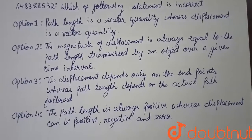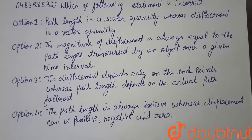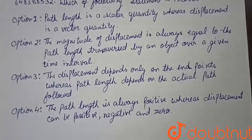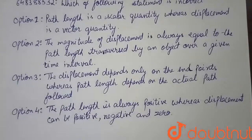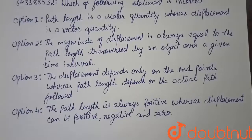Option 2 states that the magnitude of displacement is always equal to the path length travelled by an object over a given time interval. This statement is incorrect, as path length is a distance and distance can't be negative, but displacement can be negative as it has a direction.